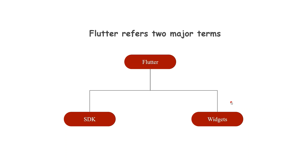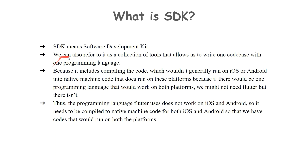Let us learn these one by one. Firstly, what is SDK? SDK means Software Development Kit. We can also refer to it as a collection of tools that allows us to write one code base with one programming language, because it includes compiling code — which wouldn't normally run on iOS or Android — into native machine code that does run on these platforms. The programming language Flutter uses does not natively work on iOS and Android, so it needs to be compiled into native machine code for both platforms.